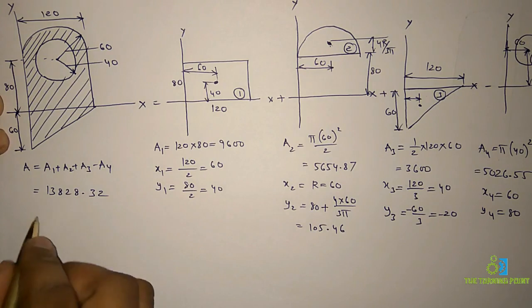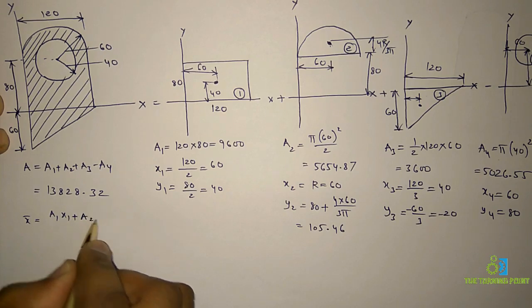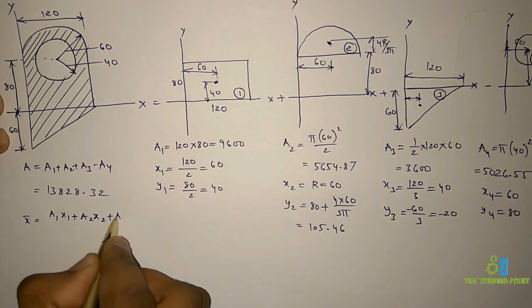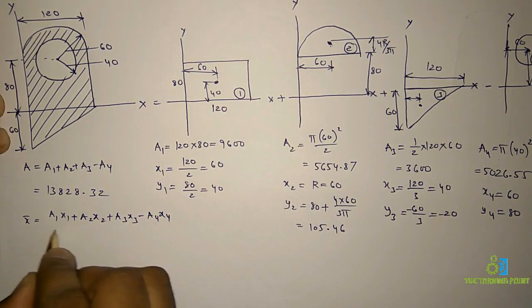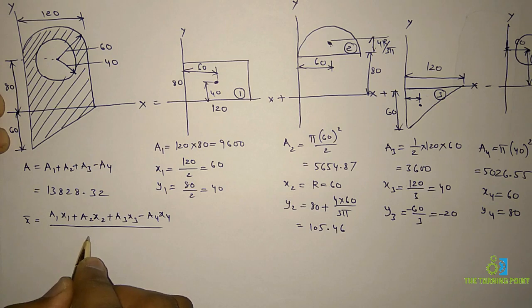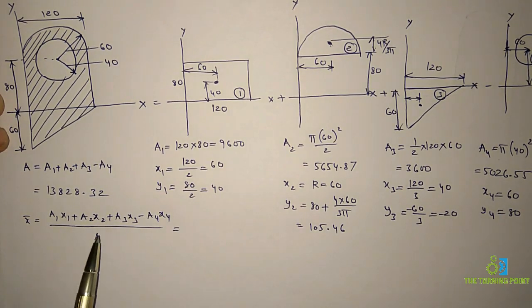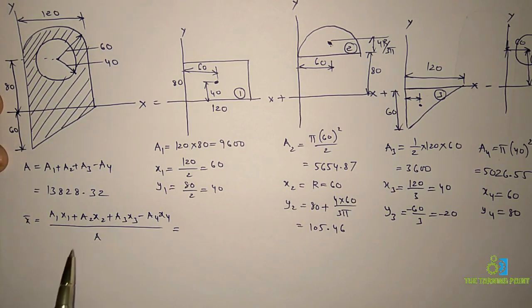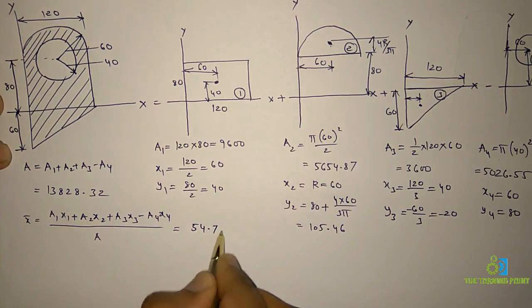To find x-bar, use the formula: x-bar equals (A1·x1 + A2·x2 + A3·x3 - A4·x4) divided by A. When I substitute the values, I get x-bar equals approximately 54.79 cm.